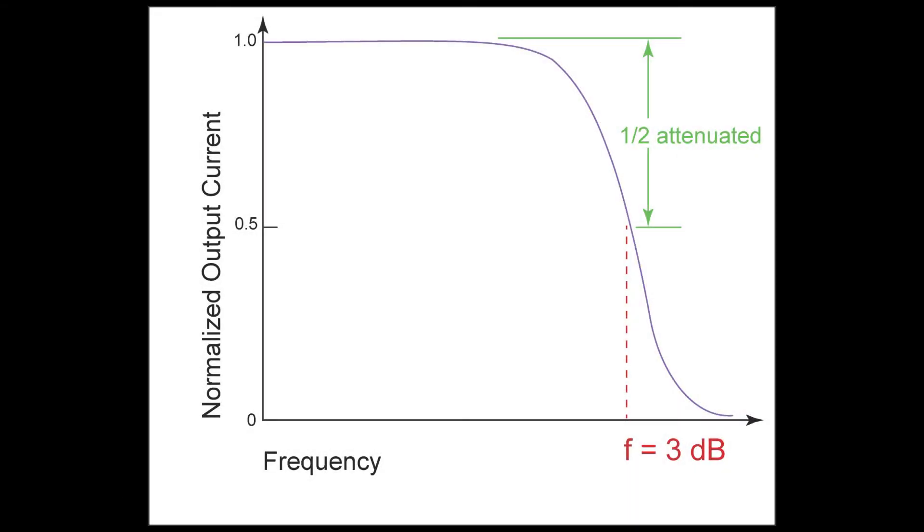Modulation bandwidth can be specified for a sine wave or square wave. It is typically the frequency at which an input signal is half the size of the original signal.